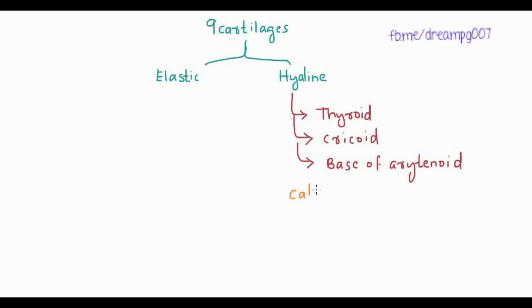As we know, hyaline cartilage undergoes calcification over time, and the first to calcify is the thyroid cartilage. Calcification starts at 20 years of age and is completed by the seventh decade of life. The pattern of calcification in the thyroid cartilage is figure-of-eight, and in malignancy this pattern is altered.